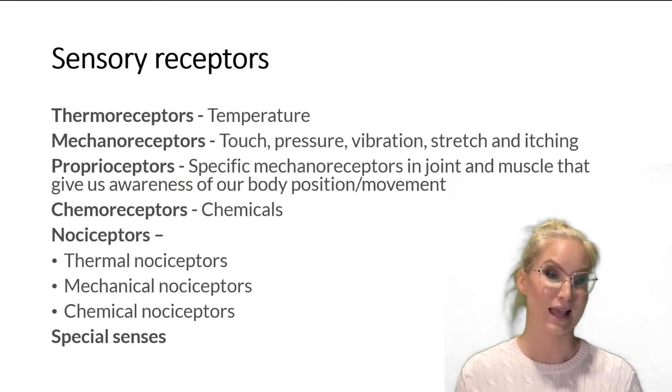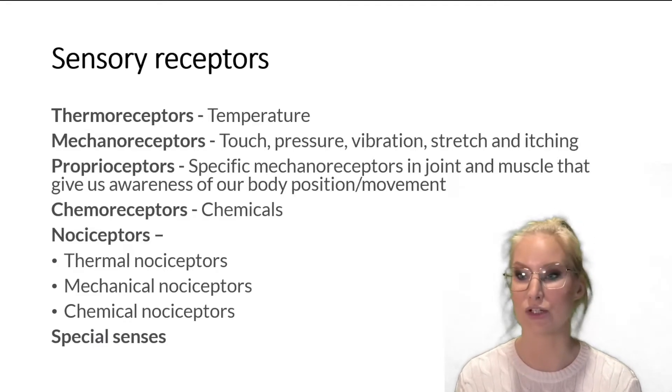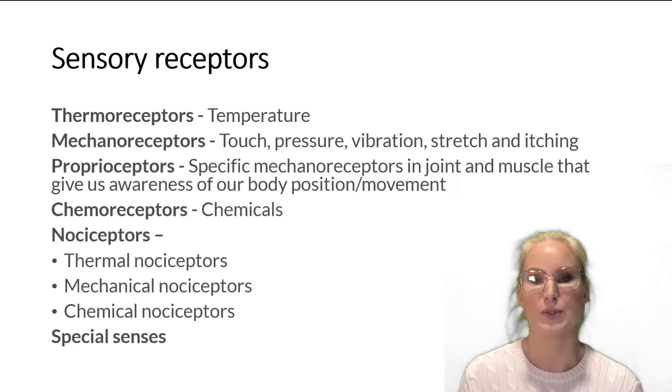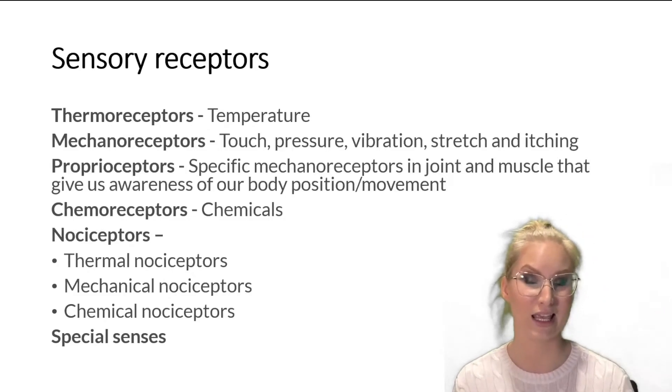In terms of how all of this happens, it all has to start with a sensory receptor, which is located in one of those body regions. And there are a few different types of sensory receptors. So the first one is thermoreceptors. So thermoreceptors literally just respond to changes in temperature. It can be heat or cold.